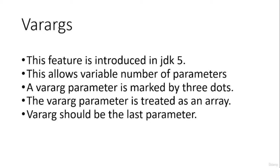One important rule about variable argument parameters is that we can have only one per method. Additionally, if a method has multiple parameters including a variable argument parameter, the variable argument parameter must be declared last so that the compiler can fetch it correctly.